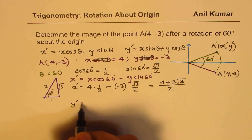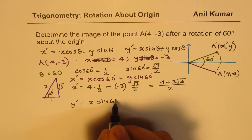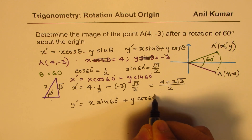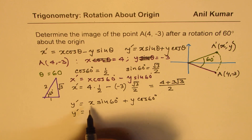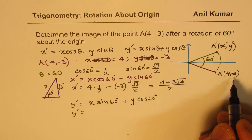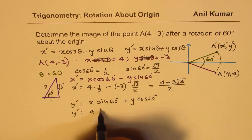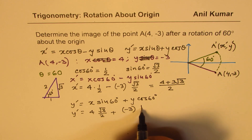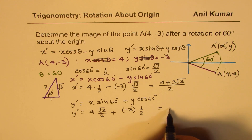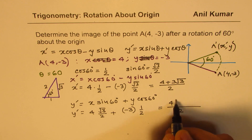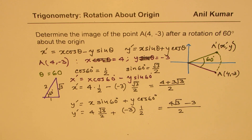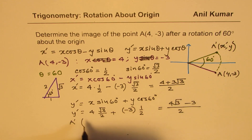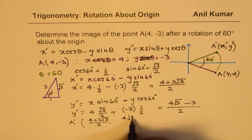As far as y' is concerned, it equals x·sin(60°) + y·cos(60°). Substituting: y' = 4·(√3/2) + (−3)·(1/2), which gives y' = (4√3 − 3) / 2. So we get the image point A' as ((4 + 3√3)/2, (4√3 − 3)/2).